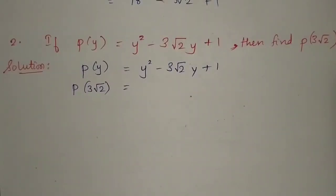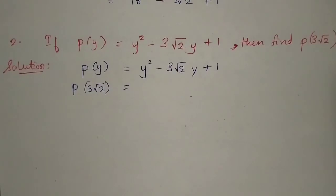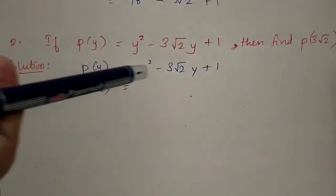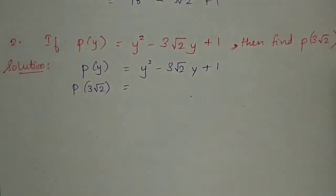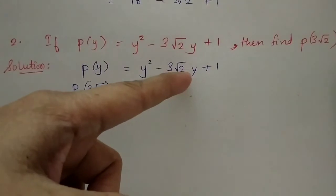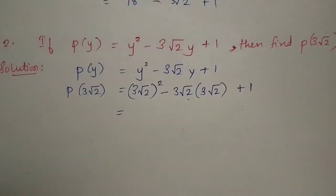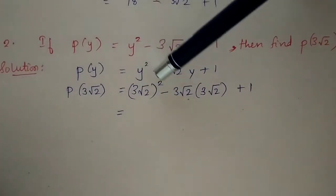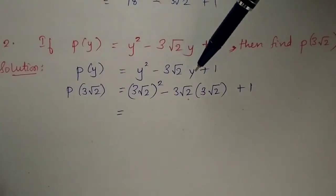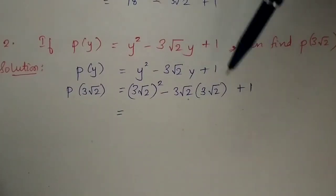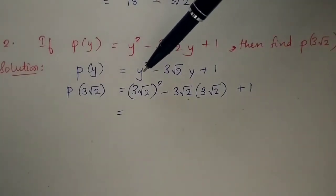In the next question, we are asked to find p(3√2) for a given polynomial in y. We have to substitute 3√2 in place of y. First, I write down the given equation, then in the next step I substitute the value. Wherever y appears, I write 3√2, keeping everything else as it is. So I substitute 3√2 in place of y, with the square, minus sign, and plus 1 all remaining as they are.